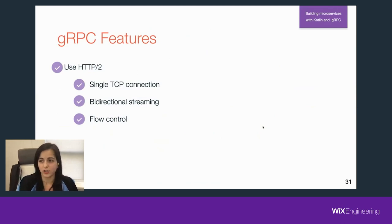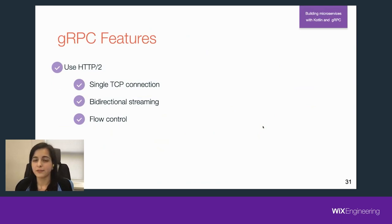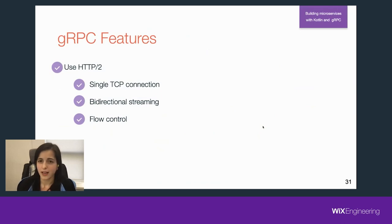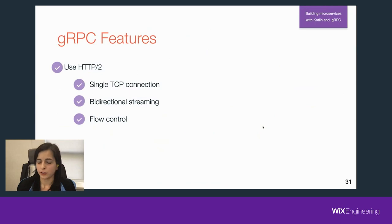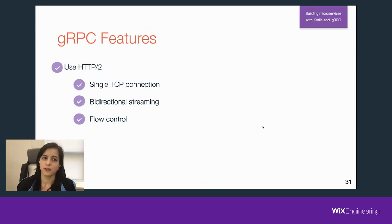Another cool feature also implemented in gRPC is flow control. Flow control solves the problem when your client and server cannot handle communication properly. For example, you might have mobile devices or iPads that are not very efficient, and it's hard for them to handle all the requests the server is streaming to them. With flow control, you can handle a couple of requests and ask the server to pause, then resume and handle other requests. It helps you handle client requests in an efficient space so the client won't go down and your customers will be happy.